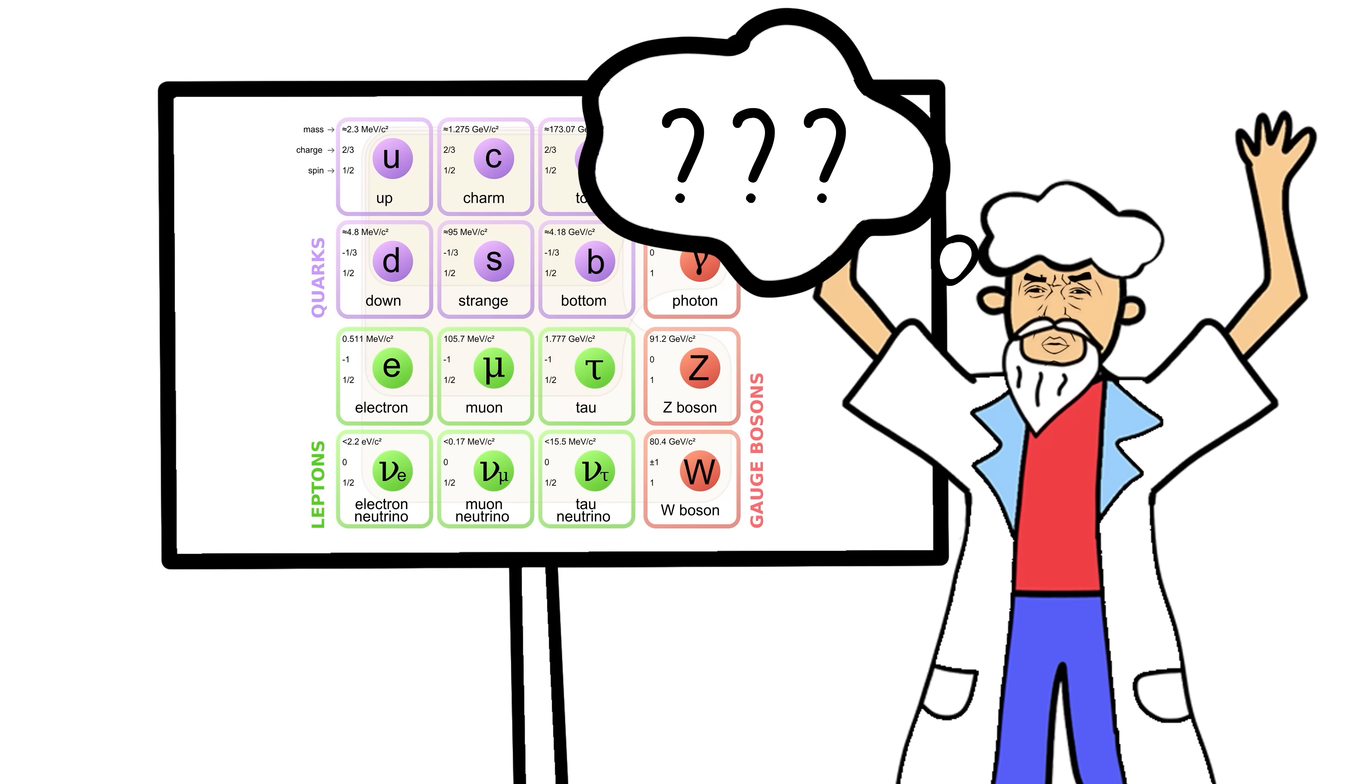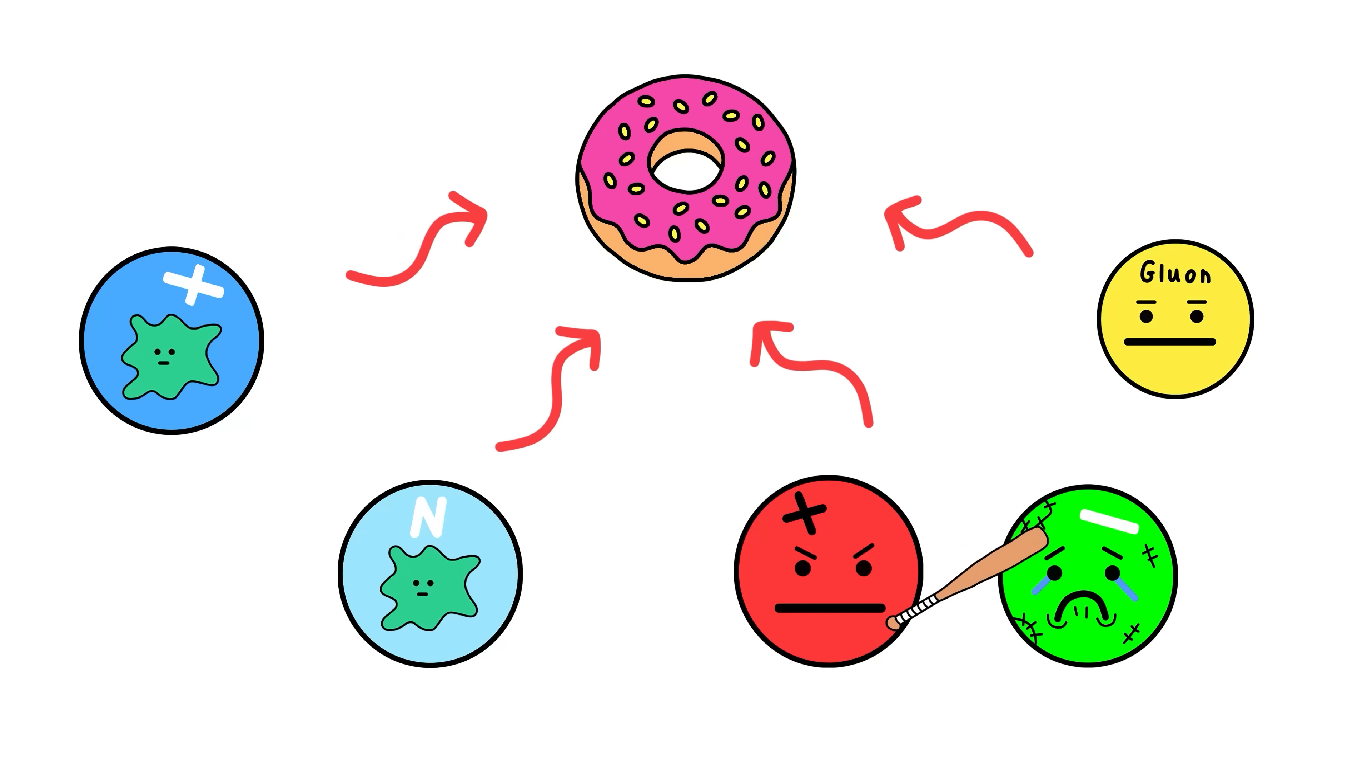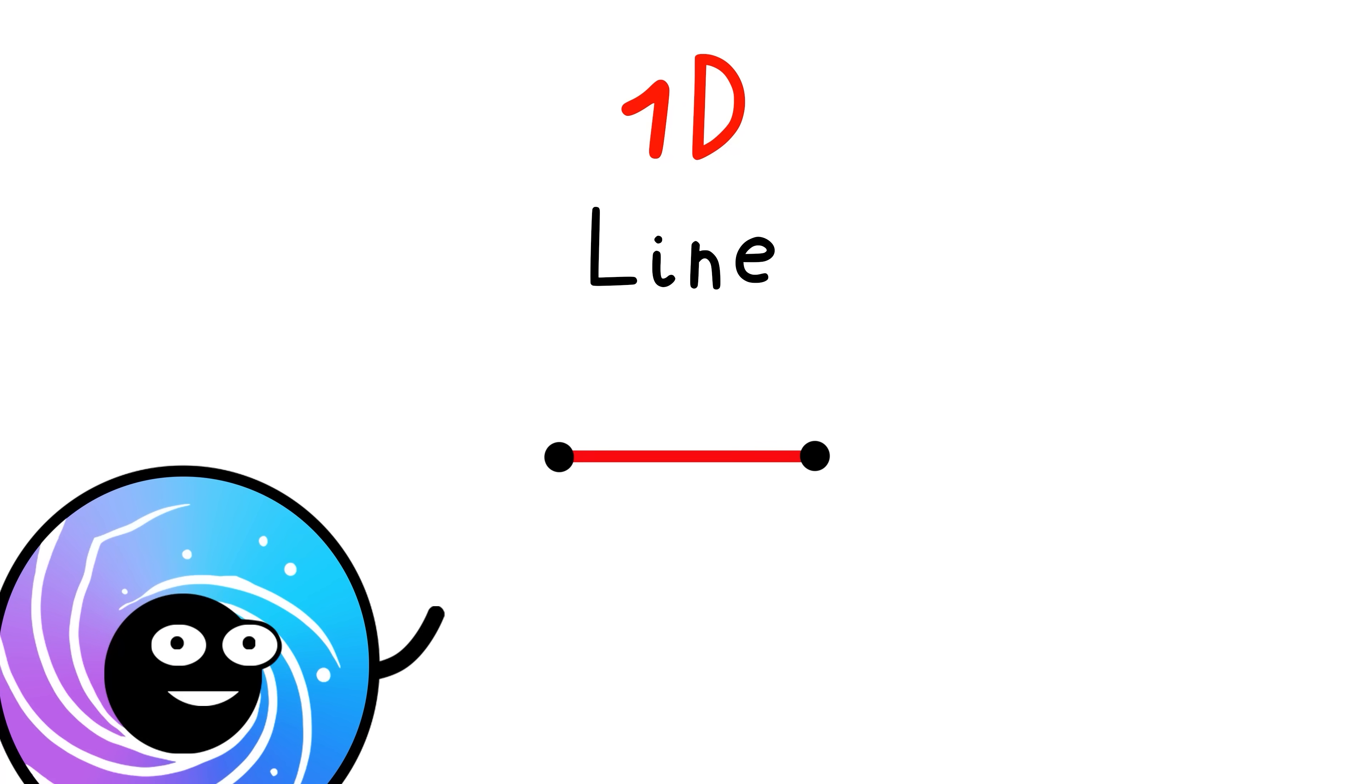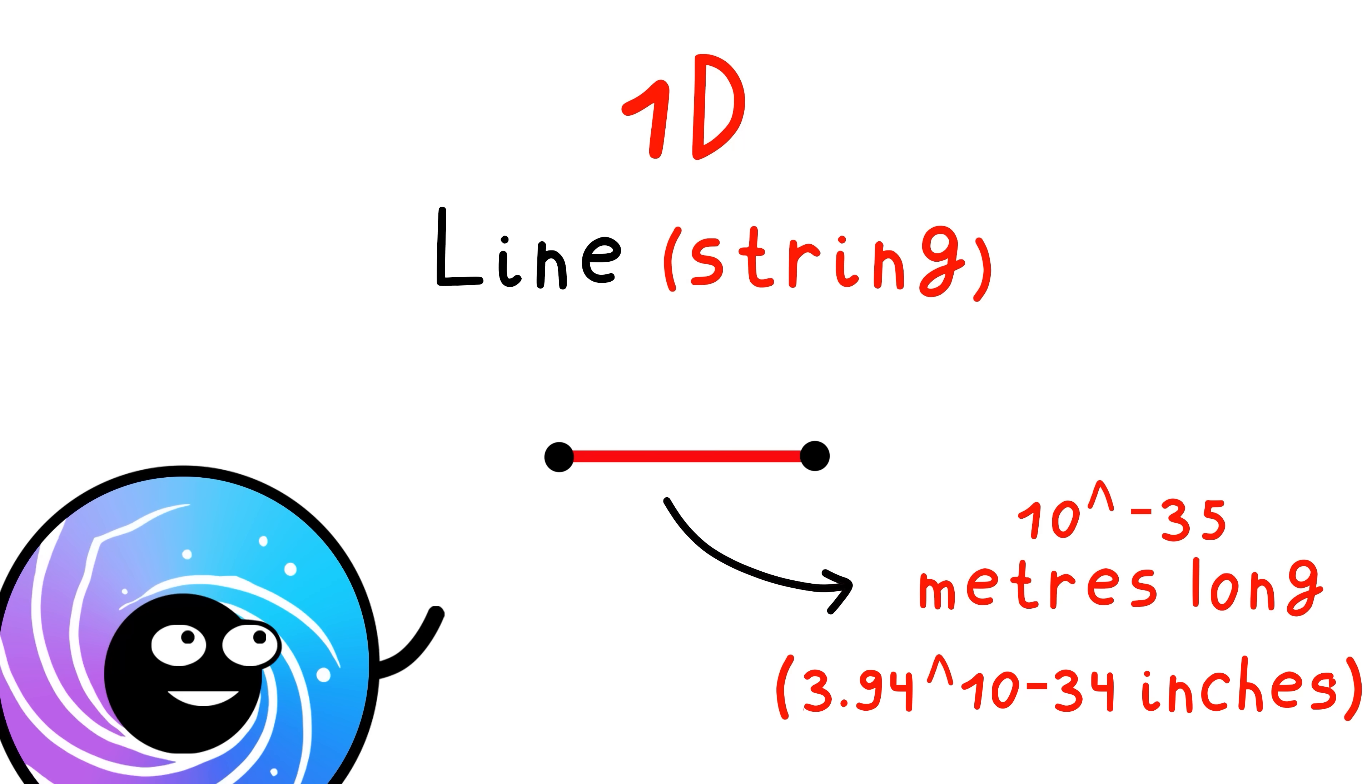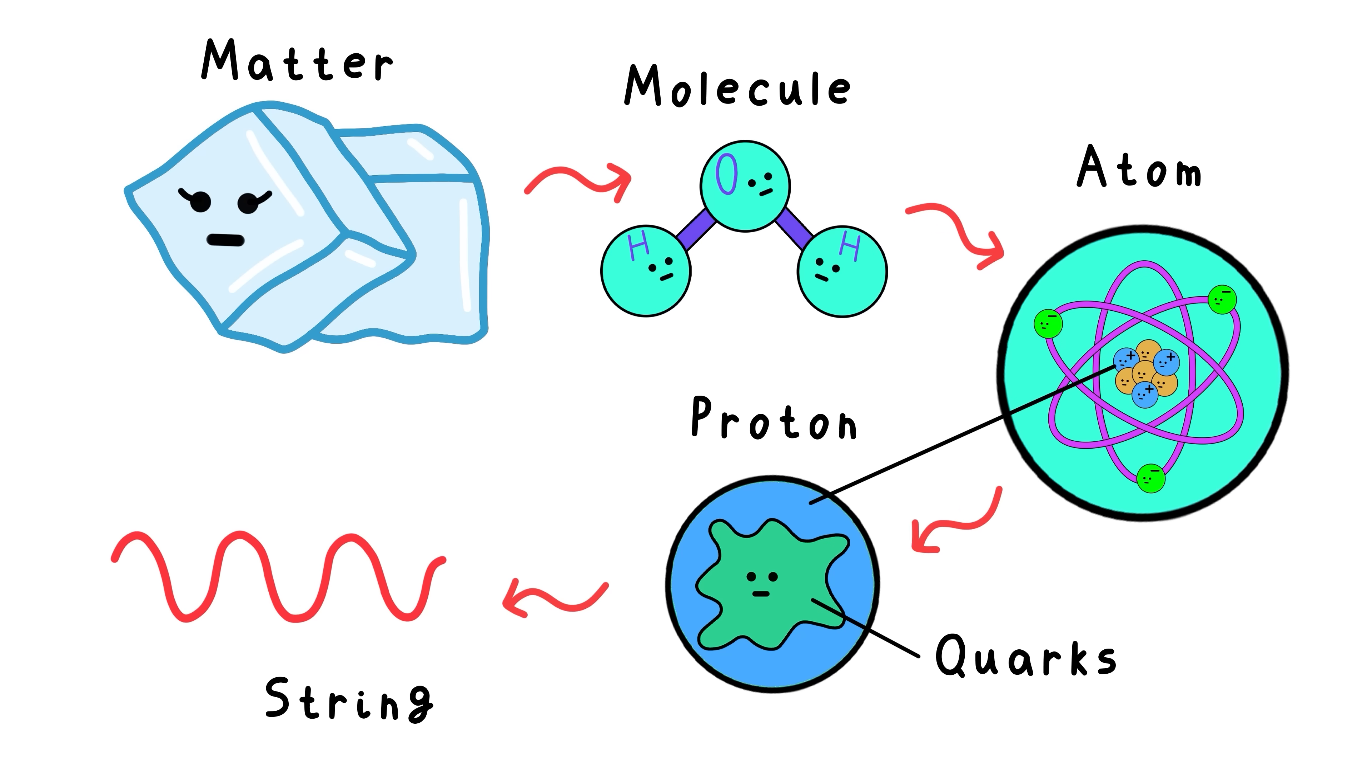But then, physicists realized there was more to these particles than just them existing. They needed to explain why they do what they do. One of the answers? String theory. That 1D line I showed you before is literally a string 10 to the negative 35 meters long. So basically, it looks like a point everywhere. And that 1D string could be the reason for why all matter in the universe is three-dimensional and behaves the way it does.